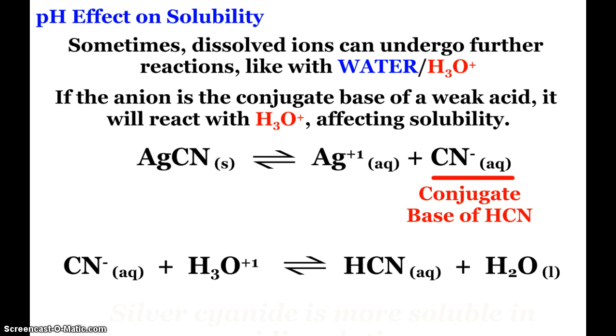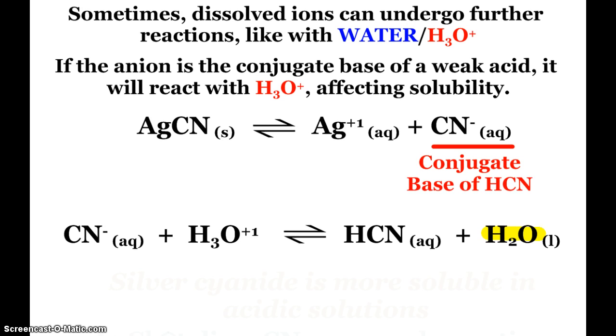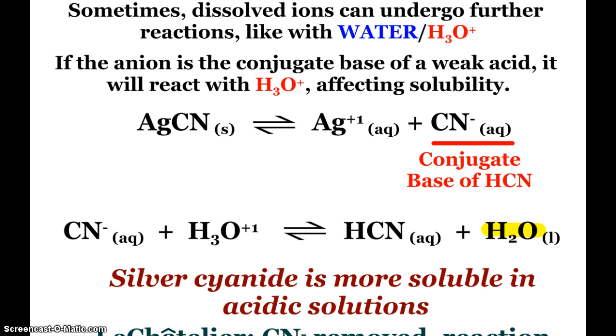And so that cyanide ion can react with hydronium and here's a little typo I think on your notes packet. I have hydroxide there but it should be water. But the cyanide ion reacts with hydronium creating our weak acid HCN and water. And so as far as solubility is concerned what that means to us, silver cyanide is more soluble in acidic solutions.